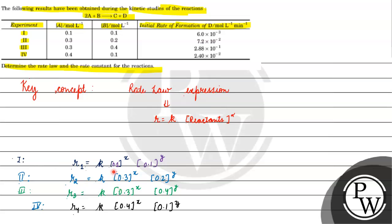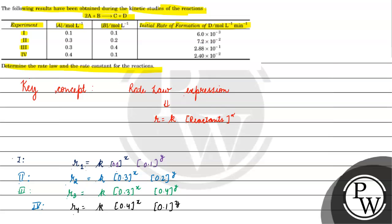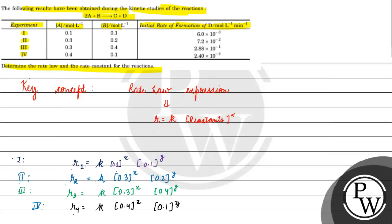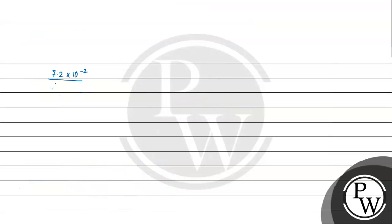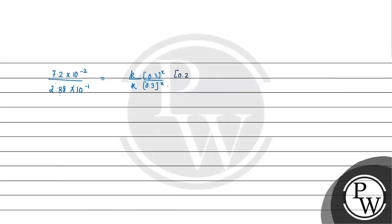Now we divide R2 by R3. R2 divided by R3 — R2 is given as 7.2 and R3 is given as 2.88 into 10 raised to the power minus 1. On the right side, K cancels out, giving us 0.3 raised to x over 0.3 raised to x, times 0.2 raised to y over 0.4 raised to y.